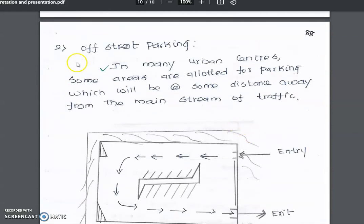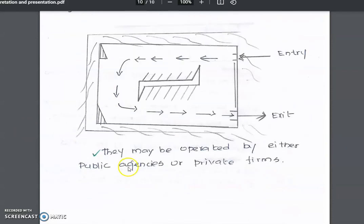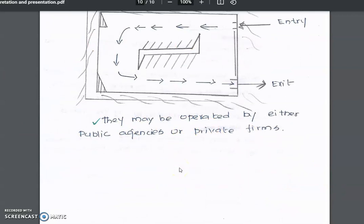The second type is off-street parking. In many urban centers, some areas are allotted for parking at some distance from the main stream of traffic. There is an entry point to access the parking area and an exit point. These may be operated by either public agencies or private firms. These are the different types of parking systems available in India. Thank you.